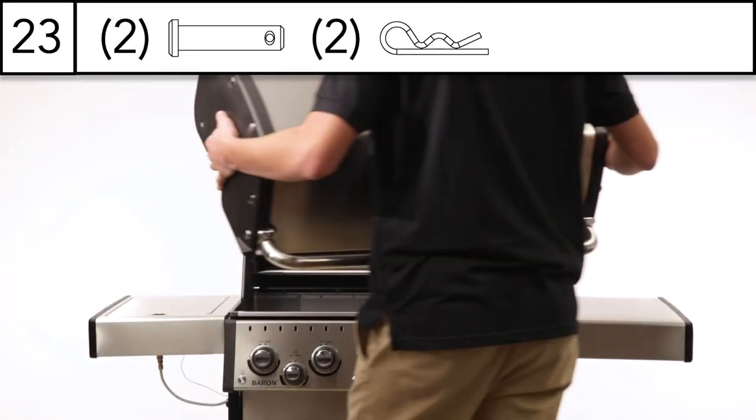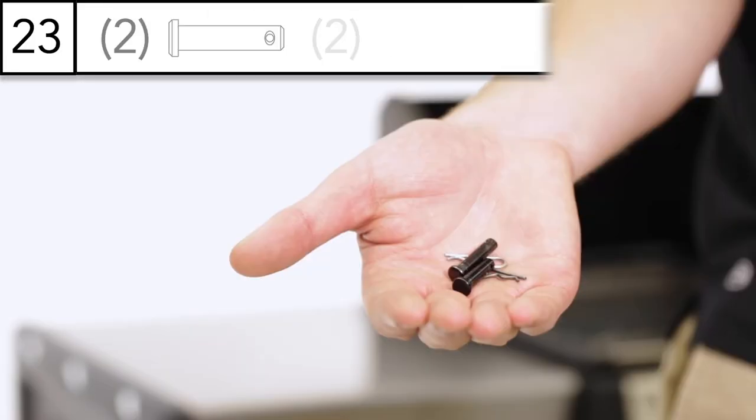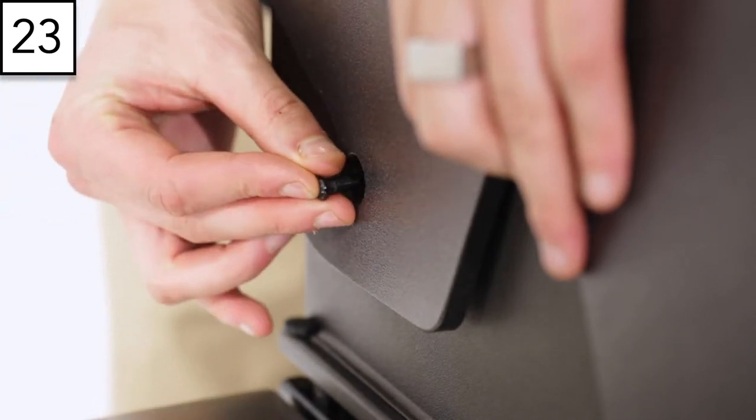Step 23. Attach the cook box lid using the hardware provided. Ensure to clip the hinge cotter pins in place.